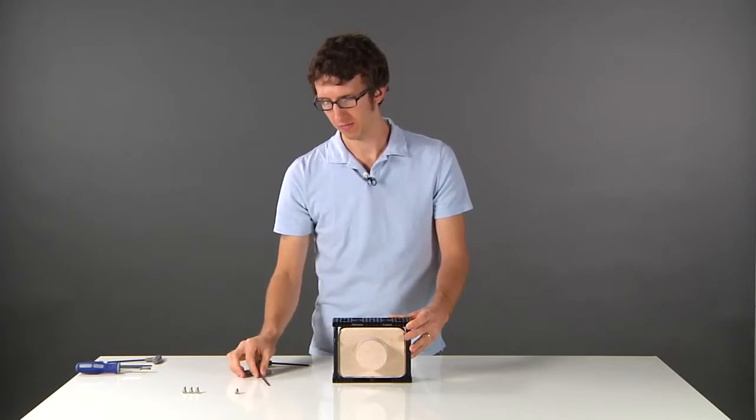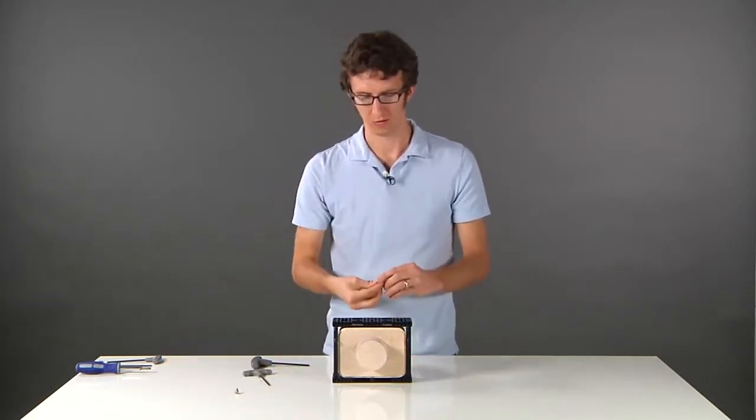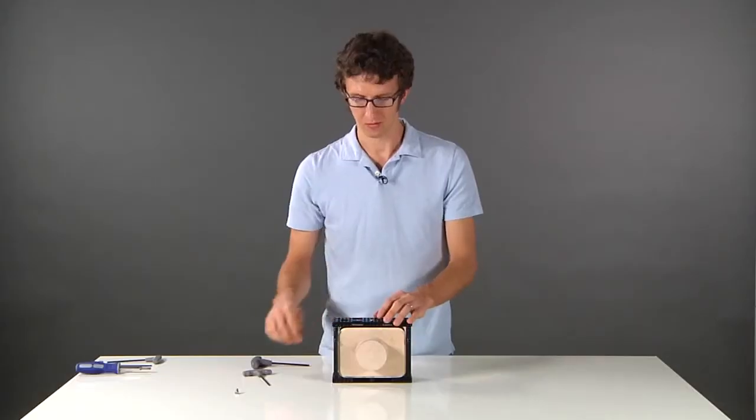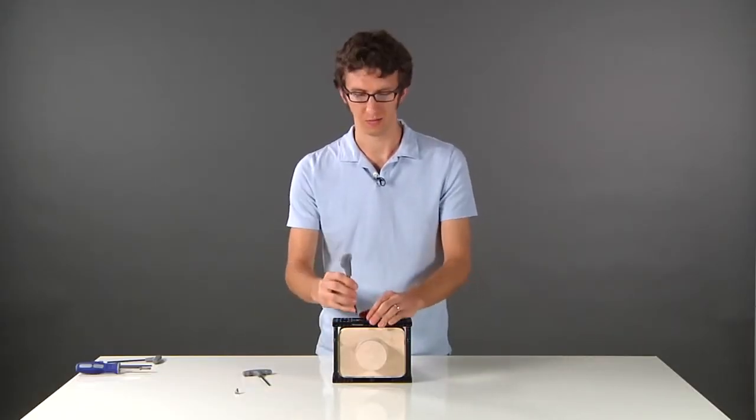Now once those four are tight, take your three longer screws and insert them into the top of the camera and then tighten them down.